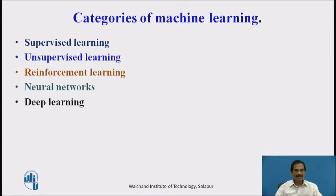Here we have some categories of machine learning approaches. The first one is supervised learning, followed by unsupervised learning. Then we go for reinforcement learning. Then we apply neural networks to learn a particular system, and finally we go for advances in neural networks to permit deep learning.